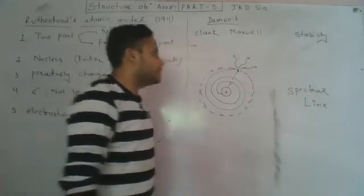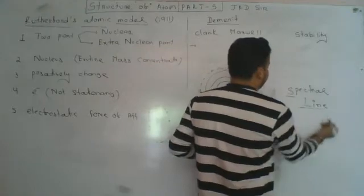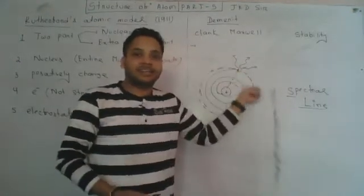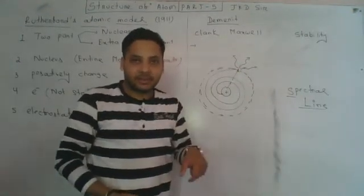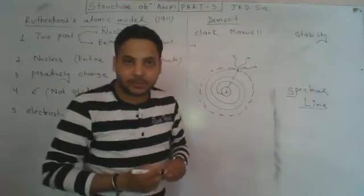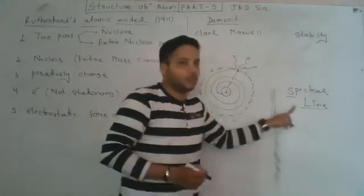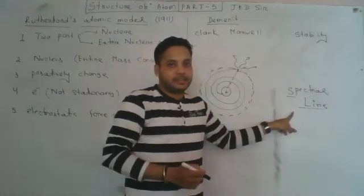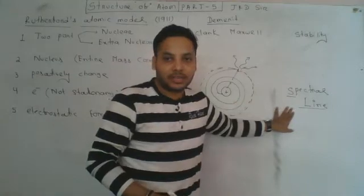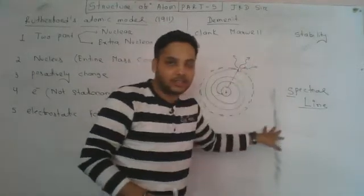Another problem involves spectral lines. The spectral lines of an element are related to the electron's energy levels. A spectrometer is used to observe these spectral lines.